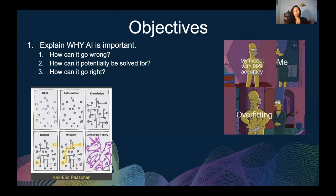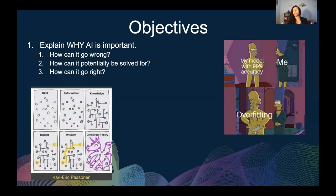How can it potentially be solved for? It might sound silly, but how it could potentially be solved is the same way we solve our software engineering problems. The same way we've put in our best practices for software engineering, machine learning and AI also has best practices. If these are kept to and constantly monitored, then we have everything we need to succeed. I have to put a disclaimer out there — AI is not necessarily the solution. You may find that once you get down into a project, maybe you should pivot, and that's also fine. But you need to have the necessary foundation in place in order to figure that out in the long run.